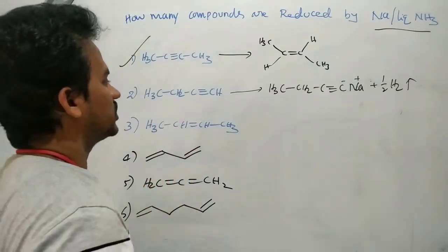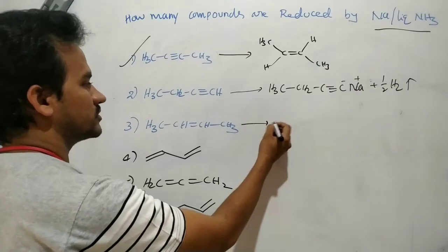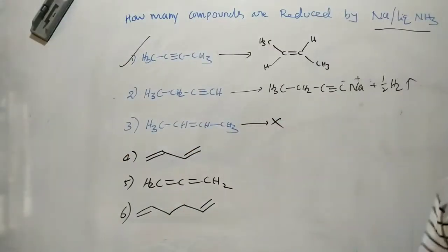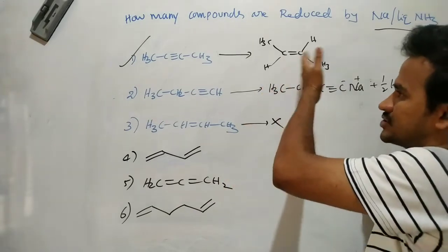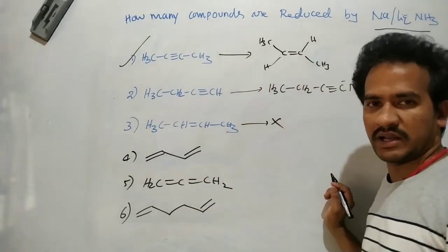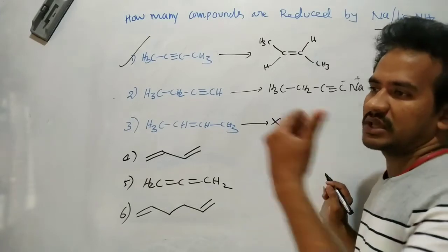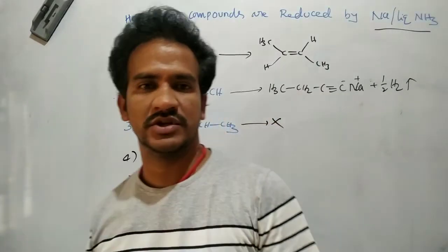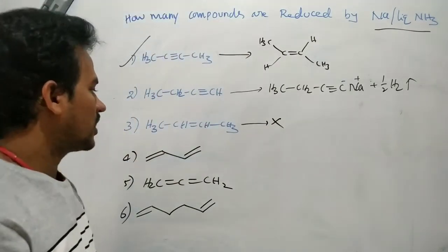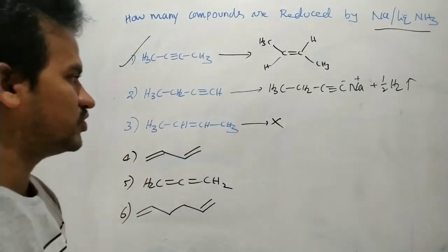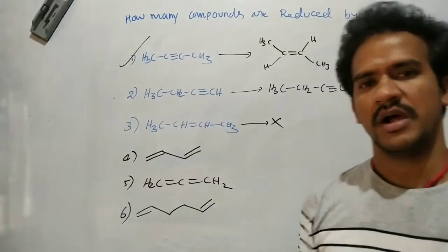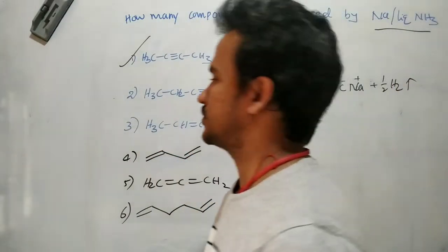Now here, trans-2-butene cannot be further reduced — no reaction with sodium liquid ammonia. The first reaction stopped at the stage of the alkene, but that alkene is not further reduced by sodium liquid ammonia.